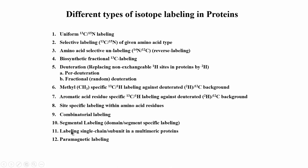Another interesting labeling scheme applies to multimeric proteins — for example, a dimer. What we can do is specifically label one chain of the dimer with C13 and keep the other chain as C12 at natural abundance. Once one portion is C13 and the other is C12, there are many experiments we can do to study that molecule. This is possible because the two chains are joined by non-covalent interactions, and we can achieve single-chain-specific labeling through different approaches.